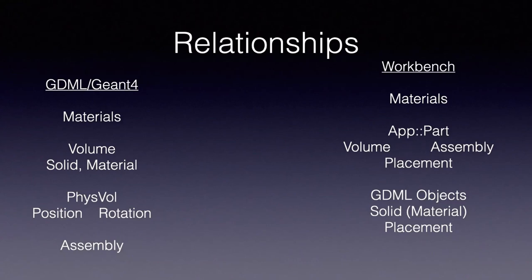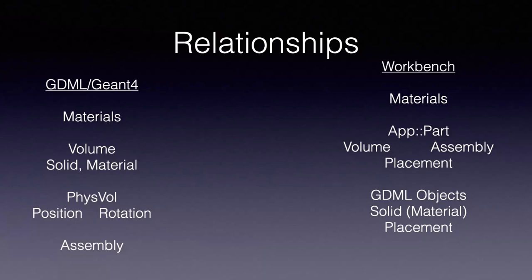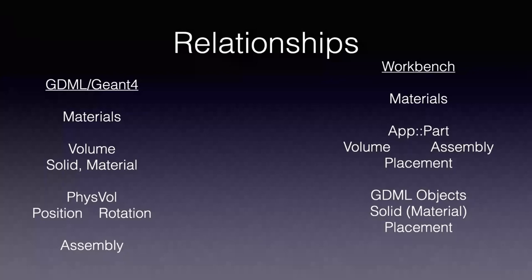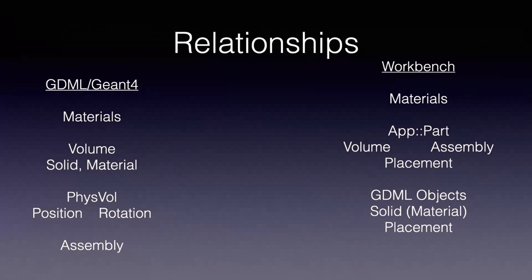It's useful to understand the relationship between how things are defined in Geant4 and GDML and how things are implemented in the workbench. We have materials in GDML and also in the workbench. Volumes in GDML are implemented as parts in the workbench, and parts also implement assemblies. The solids are implemented as GDML objects, and a solid can have a material. Note that with parts there is a placement — basically position and rotation in FreeCAD terms — and the GDML object can also have a placement. When you go to export, the export sorts out the requirement for physical volumes and adjusts the placements to make the right physical volumes with position and rotation. So what you see in FreeCAD should also be what you see when you import the geometry into Geant4.